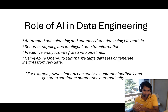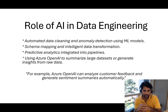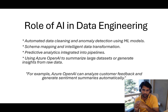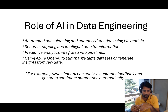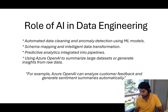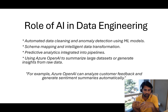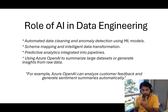Now we know what data engineering is. We wanted to understand how AI — artificial intelligence — is helping shape this whole data engineering world. There are a couple of things listed here. In the whole journey of a data engineer, they have to do data cleaning — a lot of data might not be helpful, so you clean it and take only relevant data. There's also anomaly detection: data might not be correct, there might be unusual spikes up and down in numbers. We used to do this manually or by writing code, but now we can use ML models to clean data automatically and identify anomalies automatically.